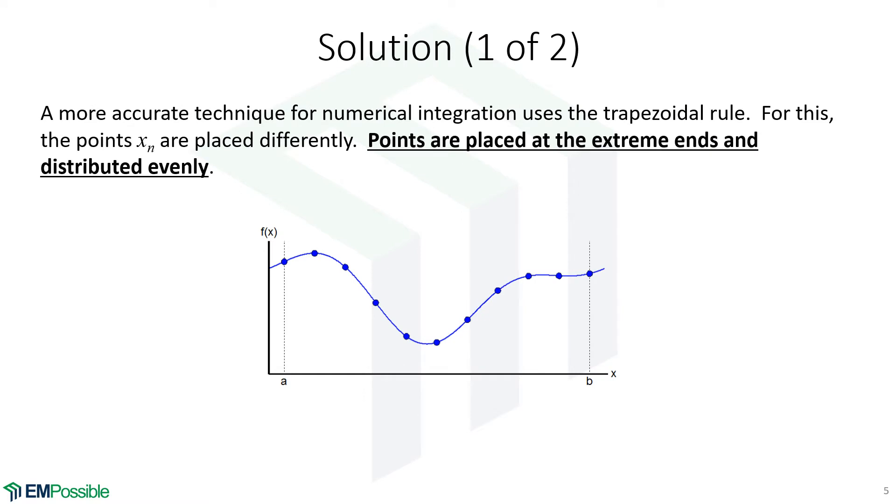We have a discrete function, and we really are only going to know the function value at these discrete points. Now, of course, I have shown the analytical function, but the reality is that's not known. We will only know the information at these discrete points.